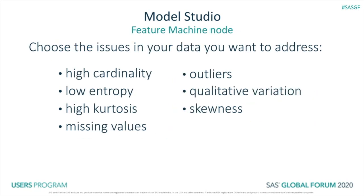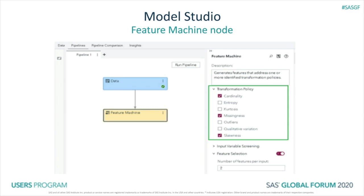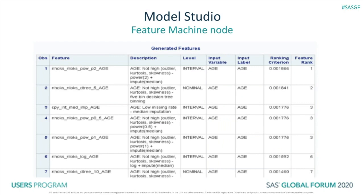You have control over the data issues that you want to address with feature engineering shown here, from things like missingness to outliers to high cardinality. What you select dictates which transformations are applied to inputs that exhibit various levels of these data issues. Here you can see the Feature Machine node in a Model Studio pipeline with its properties displayed on the right. And here you see a table included in the results of the node, showing for the variable age the various features that were created using a set of transformations such as median-based imputation followed by squaring or logging the values, tree-based binning, and others, along with their rank according to the symmetric uncertainty coefficient that can simultaneously rank interval and nominal features with respect to your target.